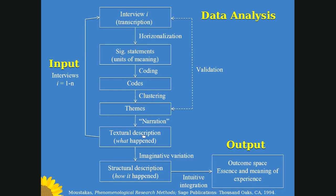You can imagine the amount of work that implies. Once we had all the individual textural descriptions, we would get together and work on the structural description — that is, how the event happened. This overlaps naturally; you cannot do textural description without starting to think of structural description. Then we take the textural descriptions, structural descriptions, and the code book for all of the interviews, integrate that, and create what we call the outcome space — the output of the analysis. The outcome space is typically presented as a diagrammatic representation accompanied by a narrative that describes the event in depth, with one of the components being the essence of that experience.